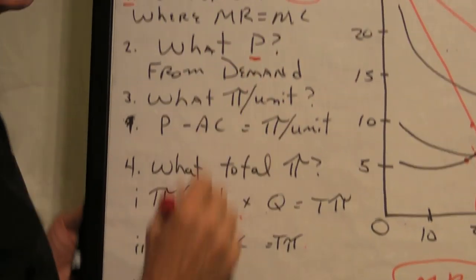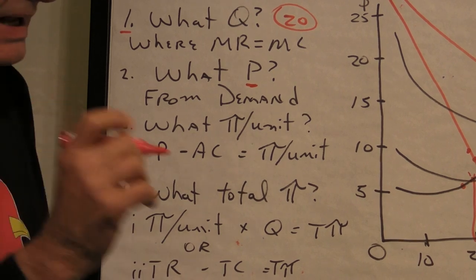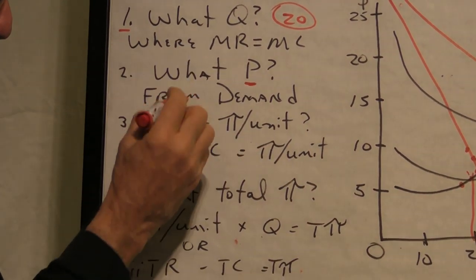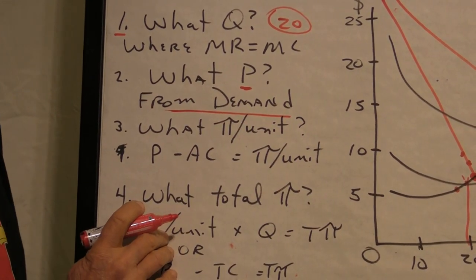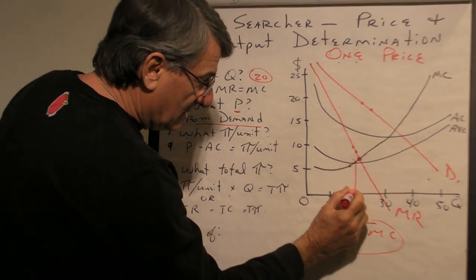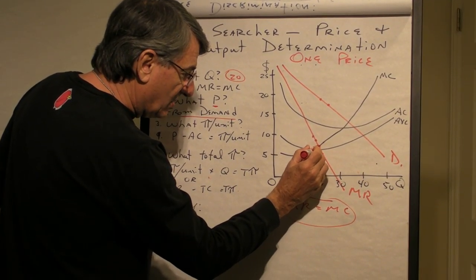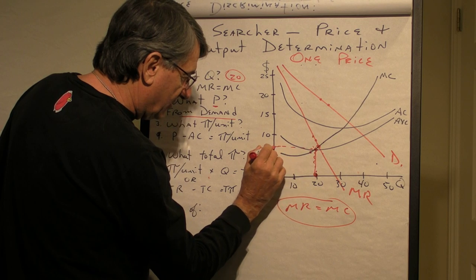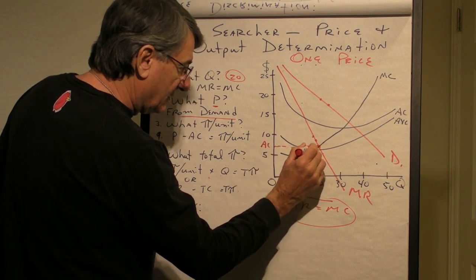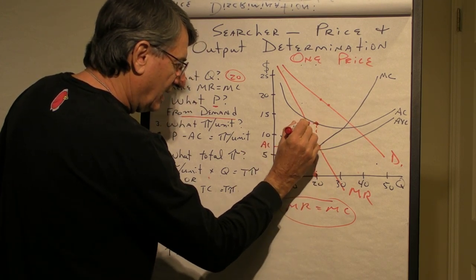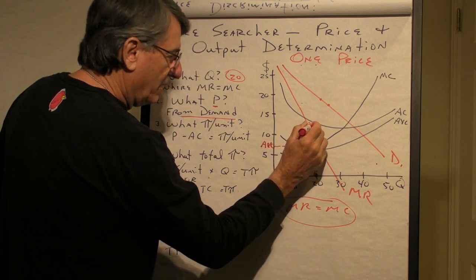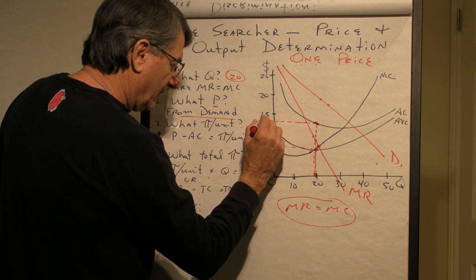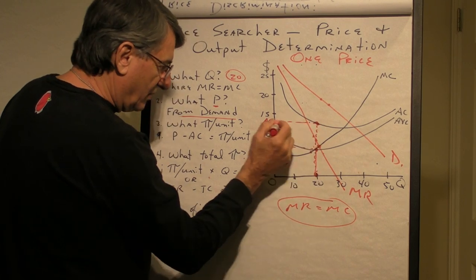The second question is, what price should they charge? And the answer is, the rule is, from demand. You take 20 units, you go up, as you go up, you cross the average cost curve, that's just—this point on the—I'm sorry, that's the average variable cost.